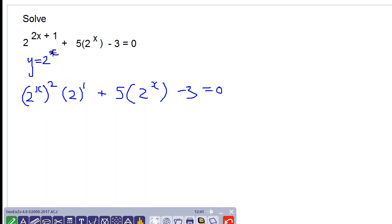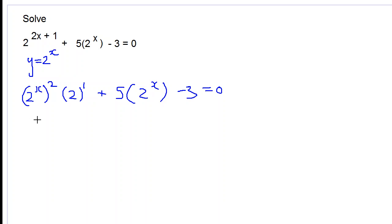So now we substitute y is equal to 2 to the x. We have y squared here, and 2 to the power 1 can come in front as 2, so we have 2y squared plus 5y minus 3 is equal to 0.